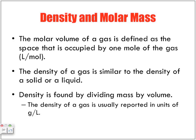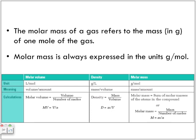Common units for gas density will be grams per liter. Molar mass of a gas refers to the mass in grams of one mole of a gas. If we've got mass, we need to find the number of moles. Molar mass is always expressed in units of grams per mole. So we have three sets of units: molar volume in liters per mole, density in grams per liter, and molar mass in grams per mole.